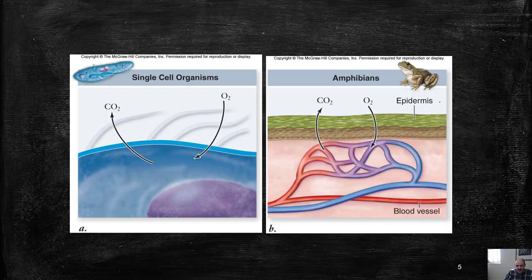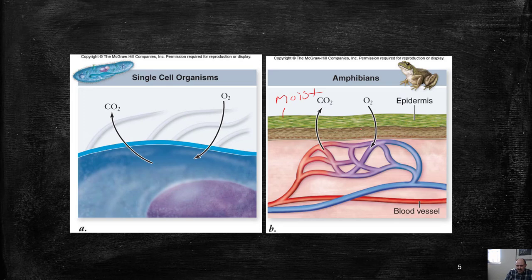Single-celled organisms exchange directly with the environment. Multicellular organisms can exchange some things with the environment as well. Here's an example of a frog that has blood vessels — far more complex than a single-celled protist — but it still undergoes gas exchange through the skin directly with the environment. In order to have gas exchange this way, you have to have a moist skin, because air dissolves into the water and then crosses the skin into the blood. So you need a thin, moist skin, which we see in some amphibians.